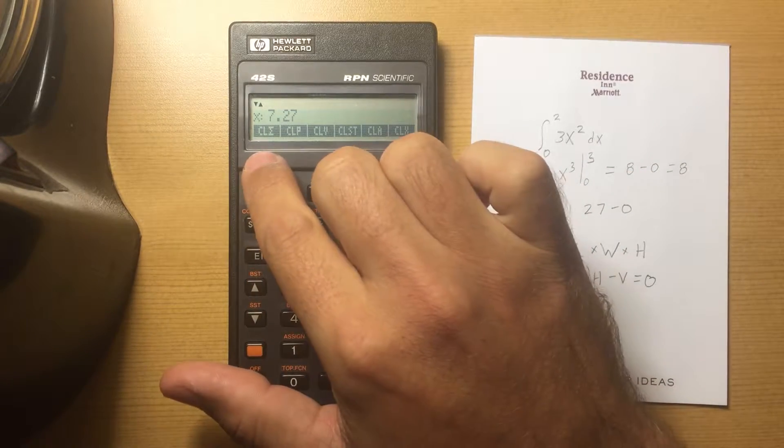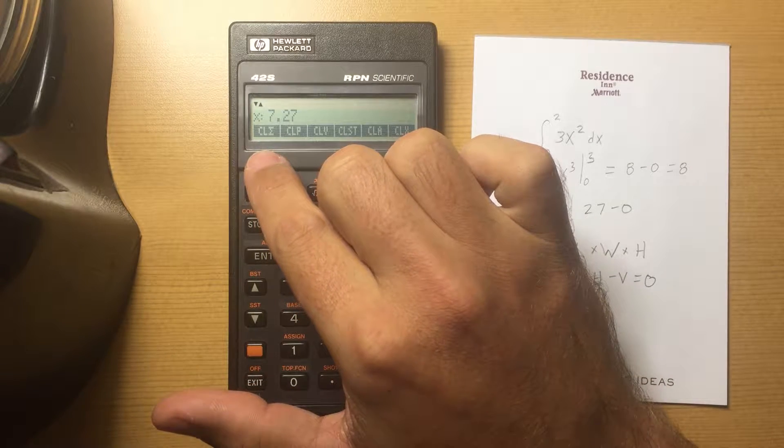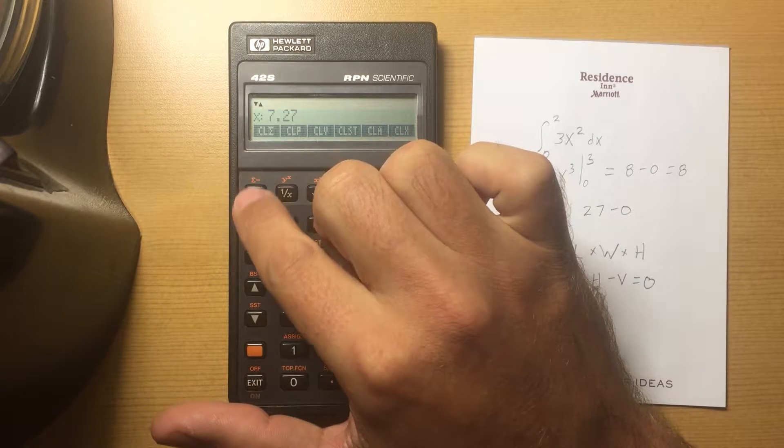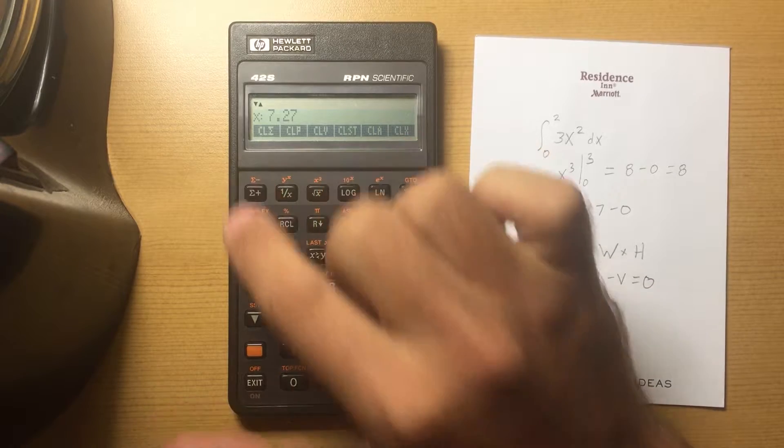The first item is Clear the Summation Register. So if you're doing statistics and entering information into your summation registers or statistics registers, hitting that will clear all of them.